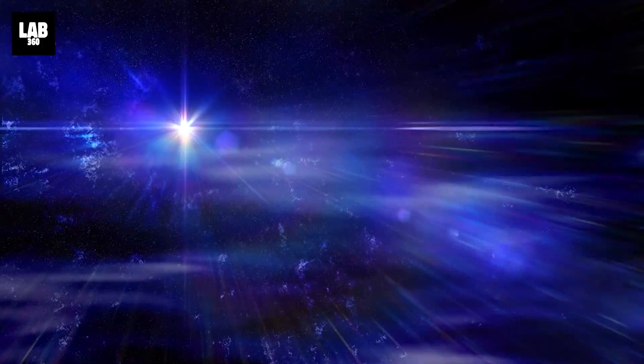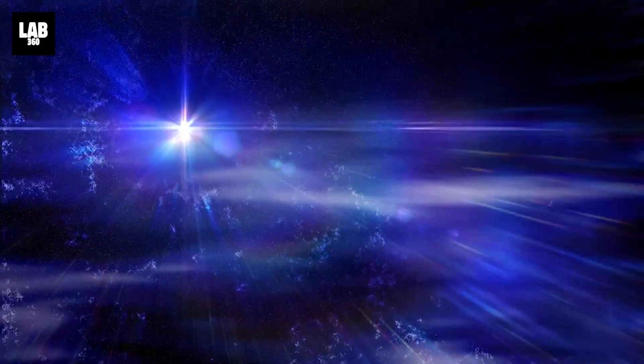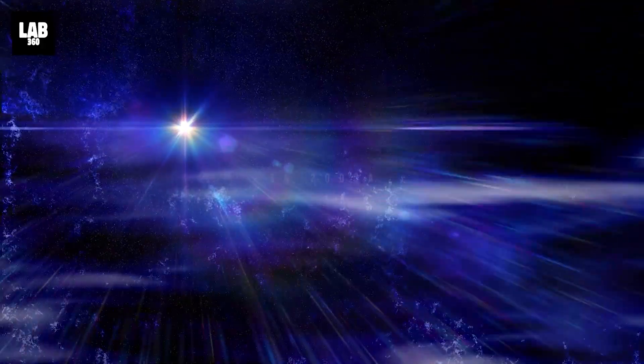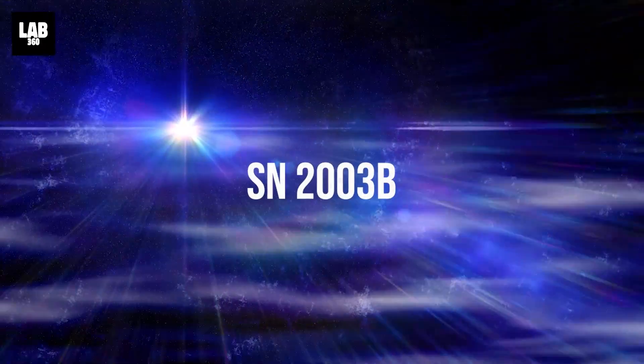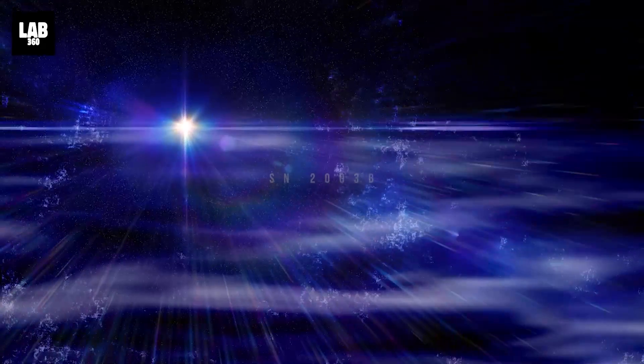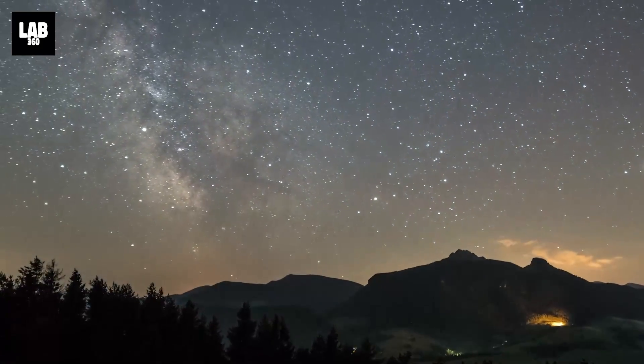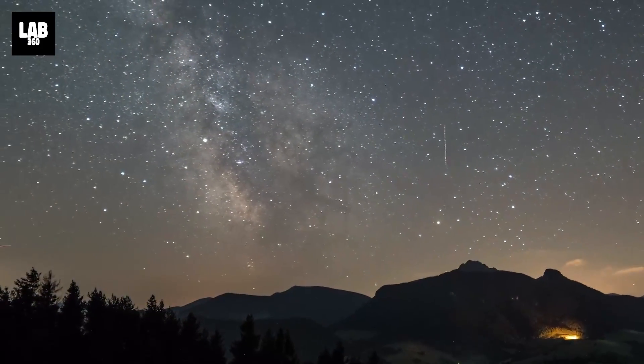For example, the first supernova to be discovered in 2003 will be named SN 2003-A, the second one, SN 2003-B, and so on. The first four observations of supernovae were naked eye observations.